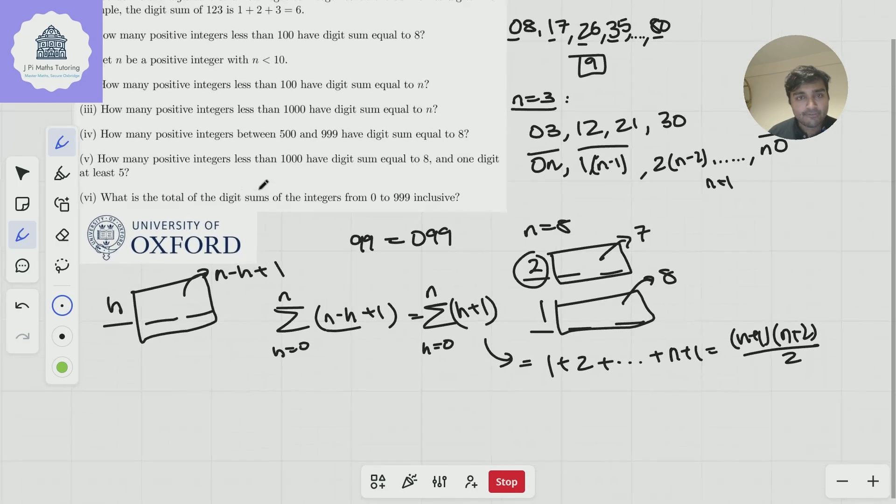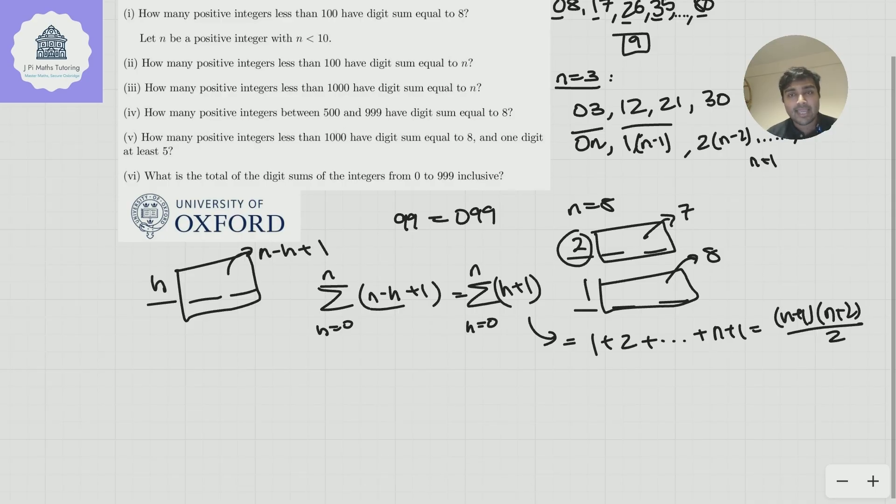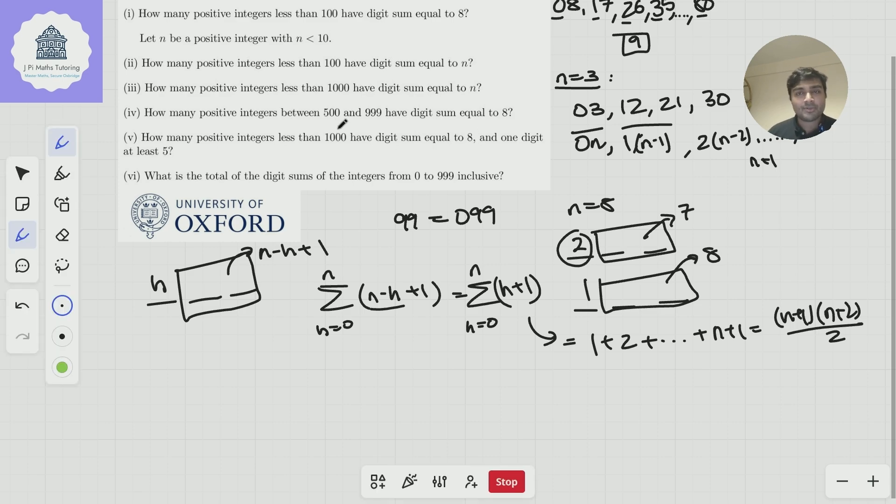Okay, cool. That's part 3 done. Let's scroll to part 4, sorry. How many positive integers between 500 and 999 have digit sum equal to 8? Okie dokie, cool. So hopefully it's pretty clear that the first digit can only be 5, 6, 7, or 8. Obviously it can't be 9. Let's say the first digit was 5. Well, then these two digits have to add up to 3. Again, going back to part 2, there's going to be four ways of doing that. If the first digit was 6, these two have to add up to 2. There's three ways of doing that. And we can kind of see what's going on here. We're going to get 4 plus 3 plus 2 plus 1, which is 10. So four ways when the first digit is 5, three ways when the first digit is 6, two ways when the first digit is 7, and one way when the first digit is 8. So the answer to part 4 is 10.